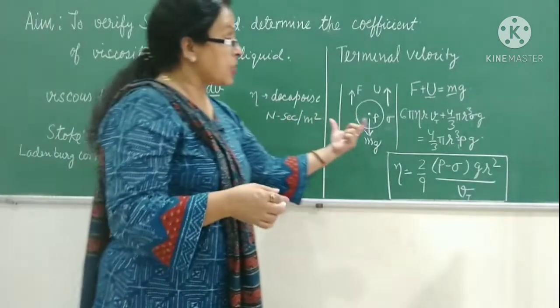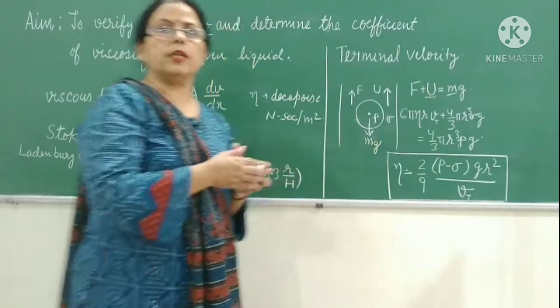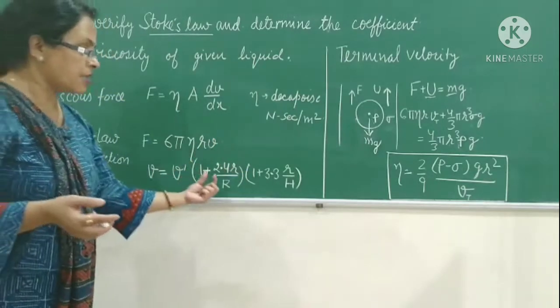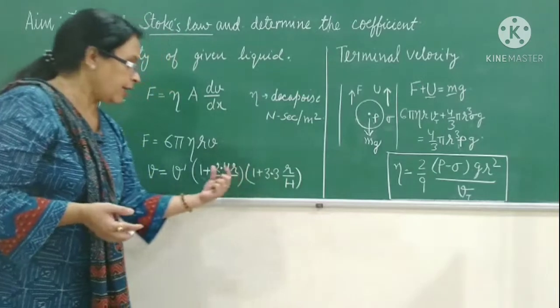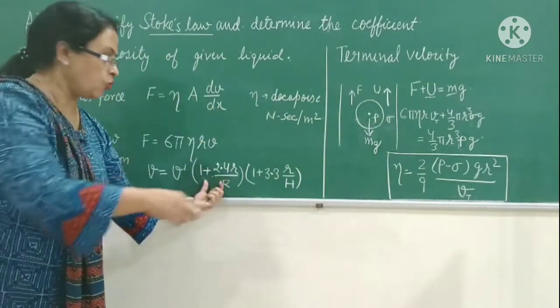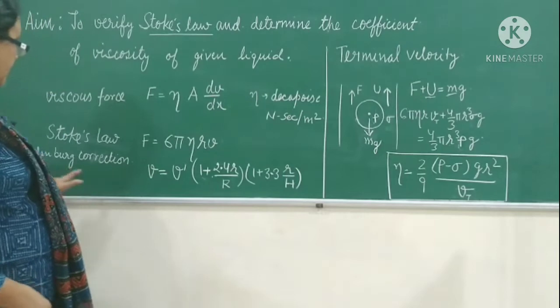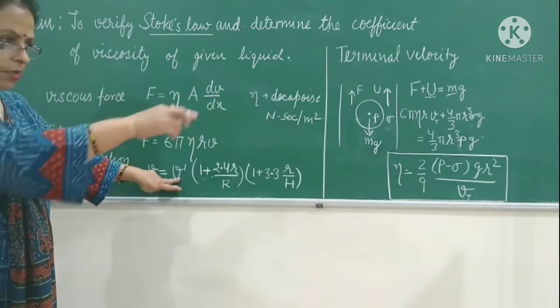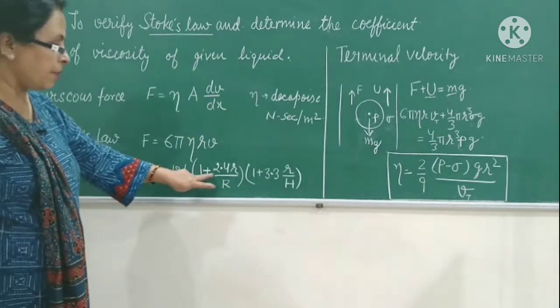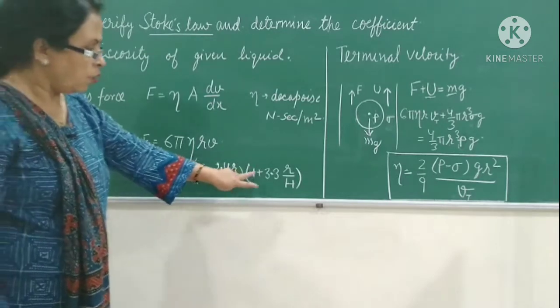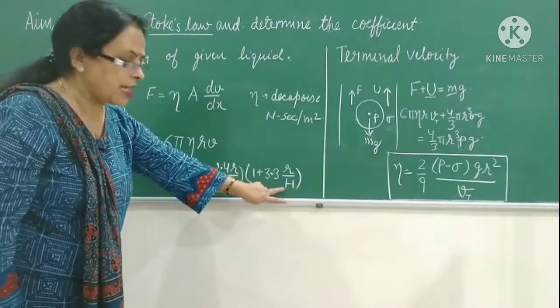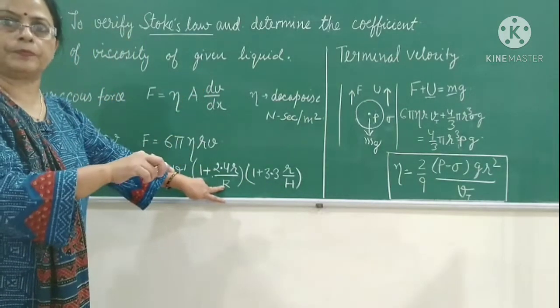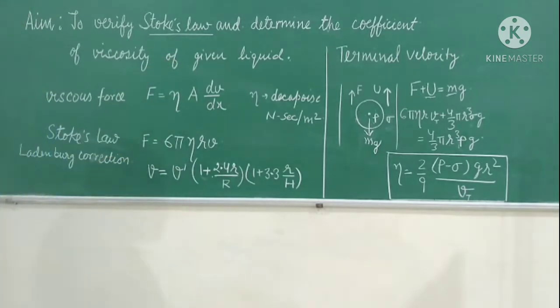Secondly, we are measuring it in a column of the liquid, whereas we need an infinite extent for that. So two corrections are made for this - one is for the depth and other is for the radius of the tube. These are known as Leidenberg's correction. Our corrected value of velocity is equal to V dash, which we measured, times (1 plus 2.4 R upon capital R) times (1 plus 3.3 R upon H), where H is the depth of the liquid and R is the radius of the liquid column. So this is about the theory of the experiment.